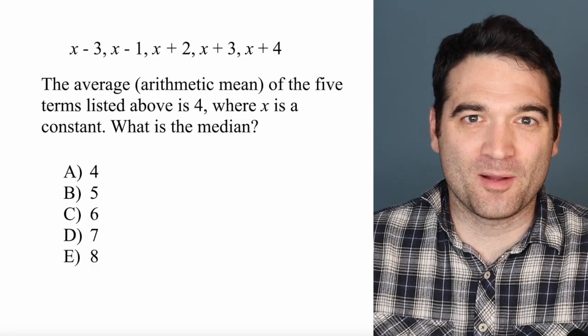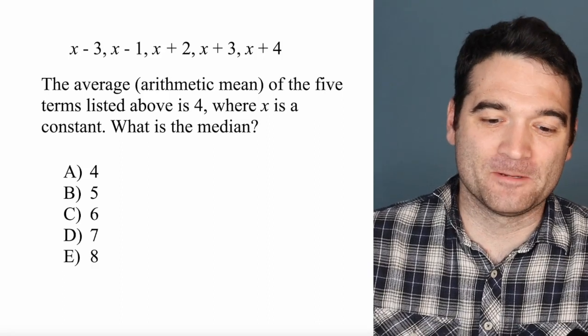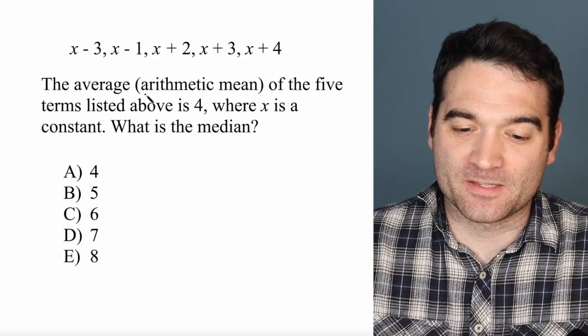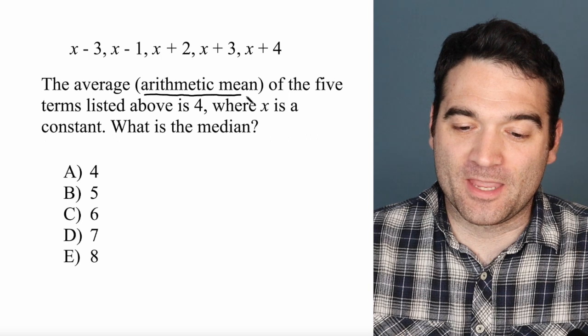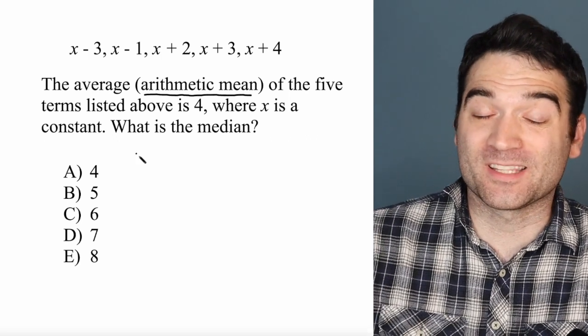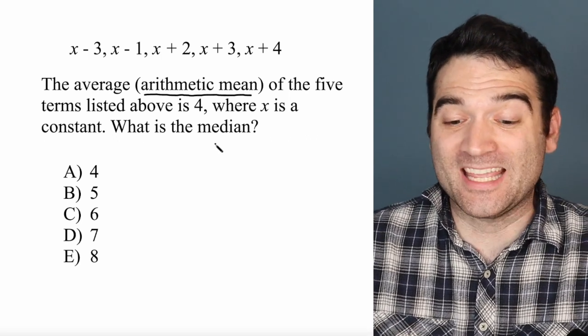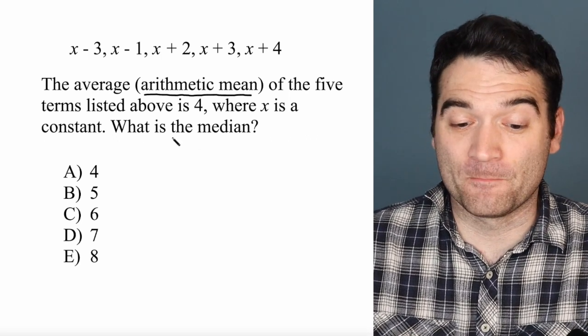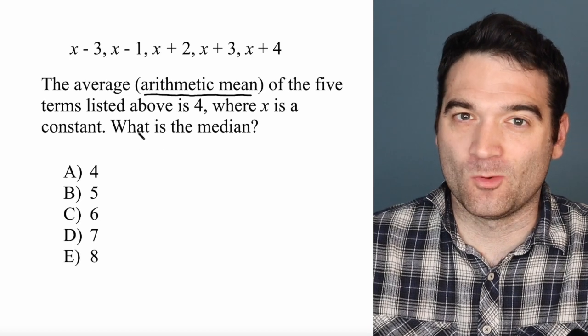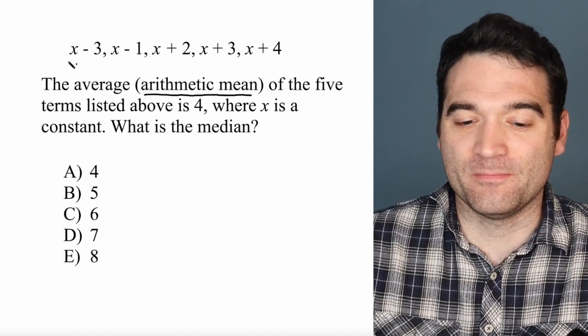Here's a GRE algebra problem. Let's take a look. The average — that is the arithmetic mean — of the five terms listed above is 4, where x is a constant. What is the median?